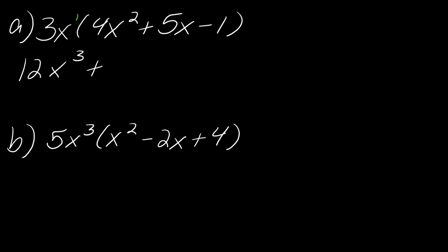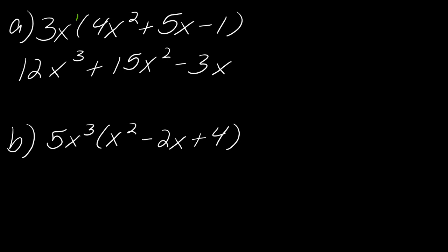For example, I'll take 3x times 4x cubed. 3 times 4 is 12, and then I add up the exponents: x to the first and x squared becomes x cubed. For the next term, 3 times 5 is 15, and x to the first times x to the first adds up to x squared. Then this last one will just be minus 3x. You just add up the exponents — I have a whole video reviewing exponent rules, by the way.